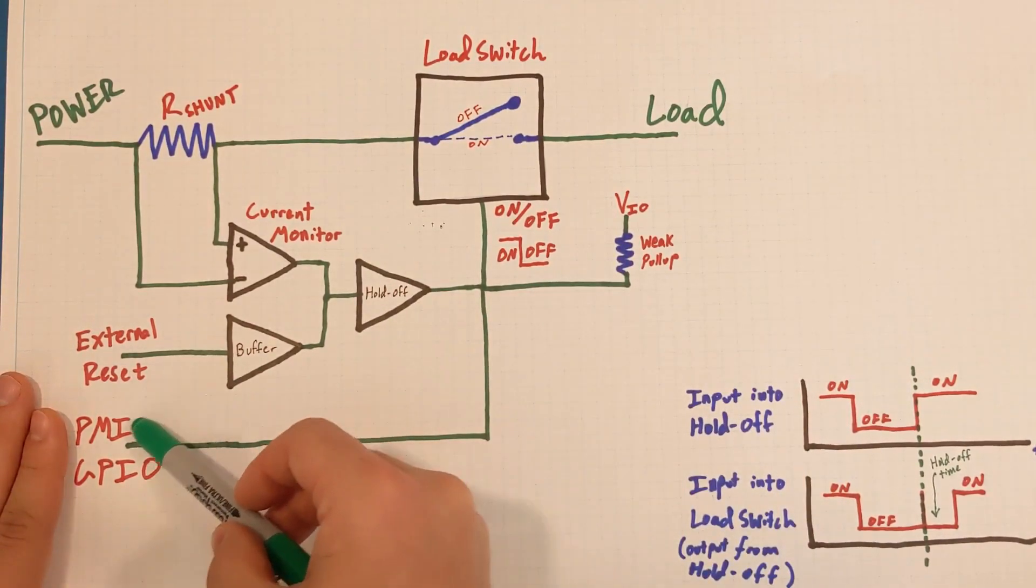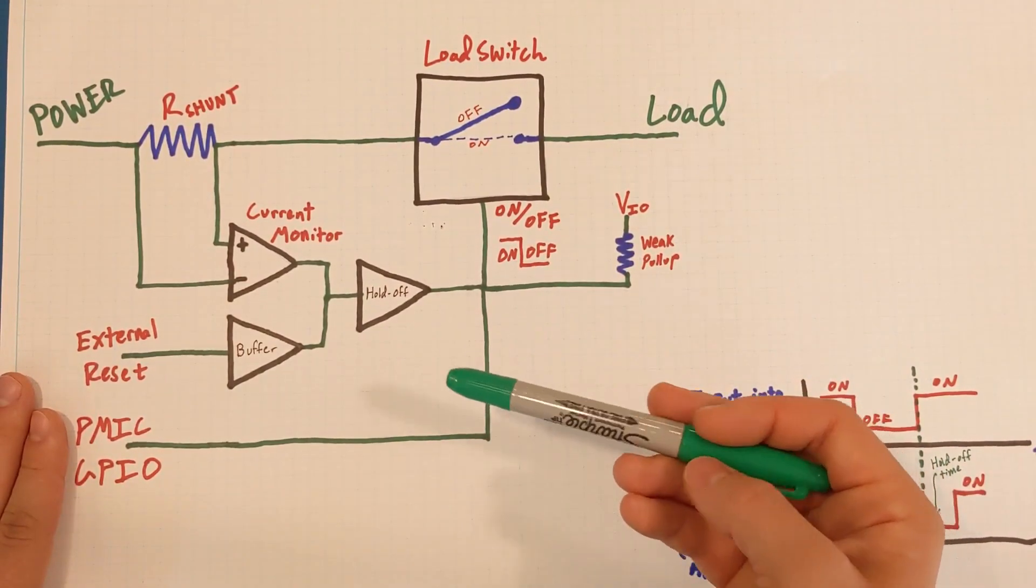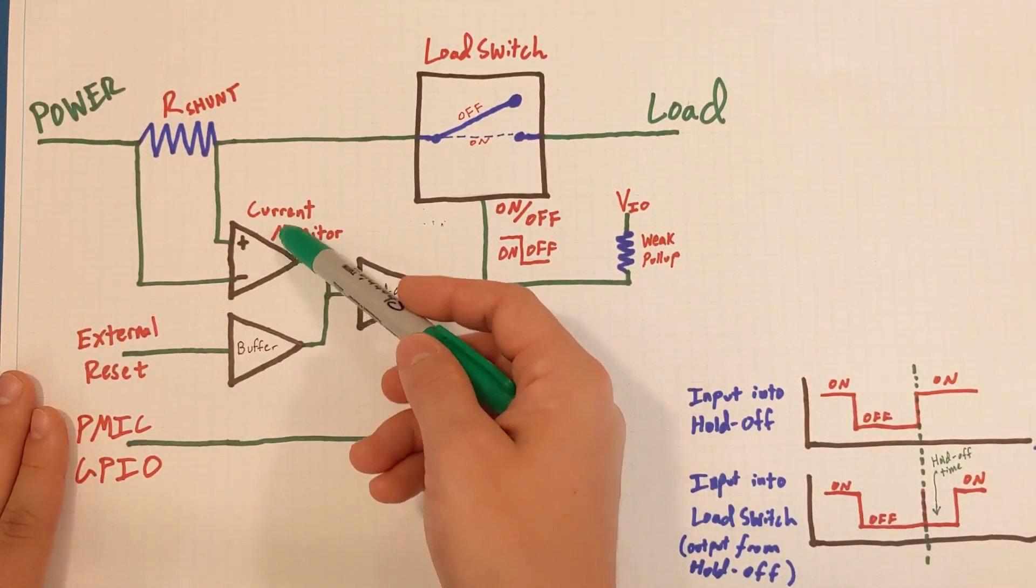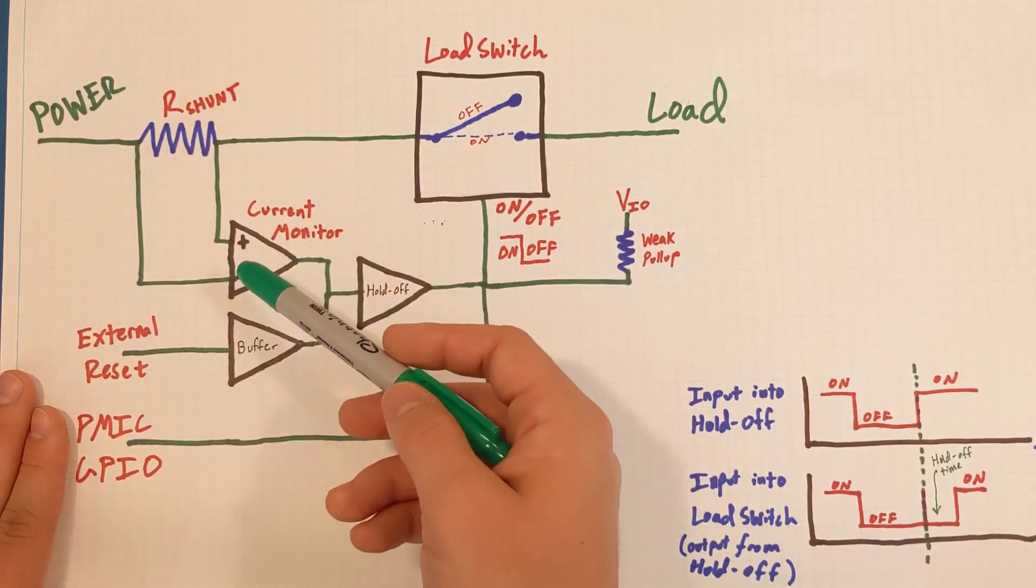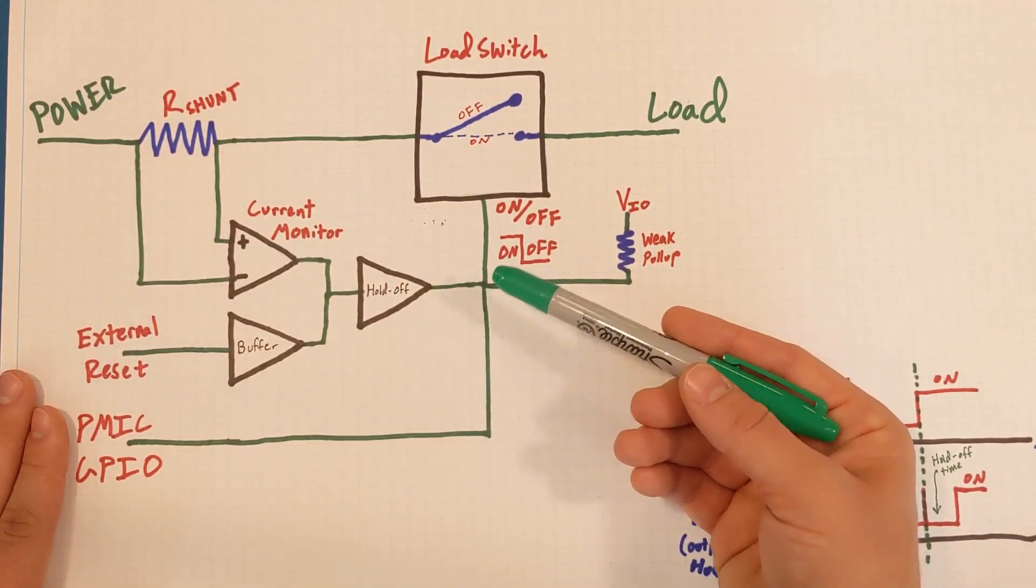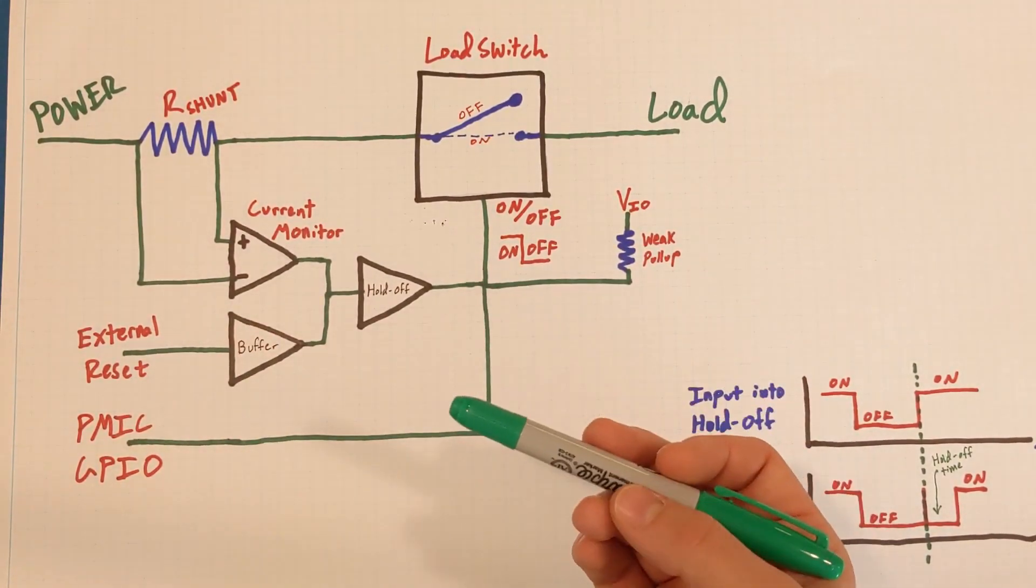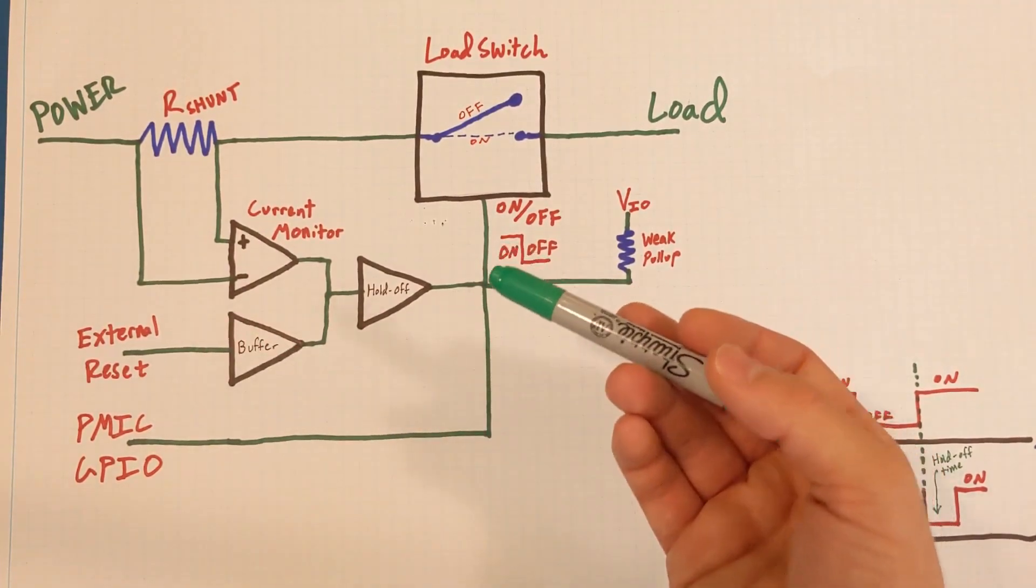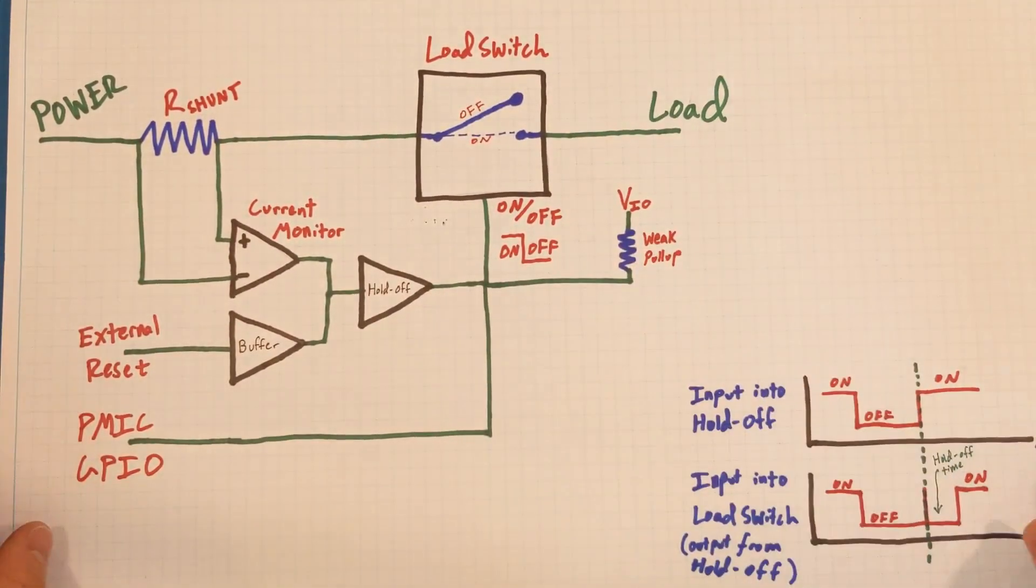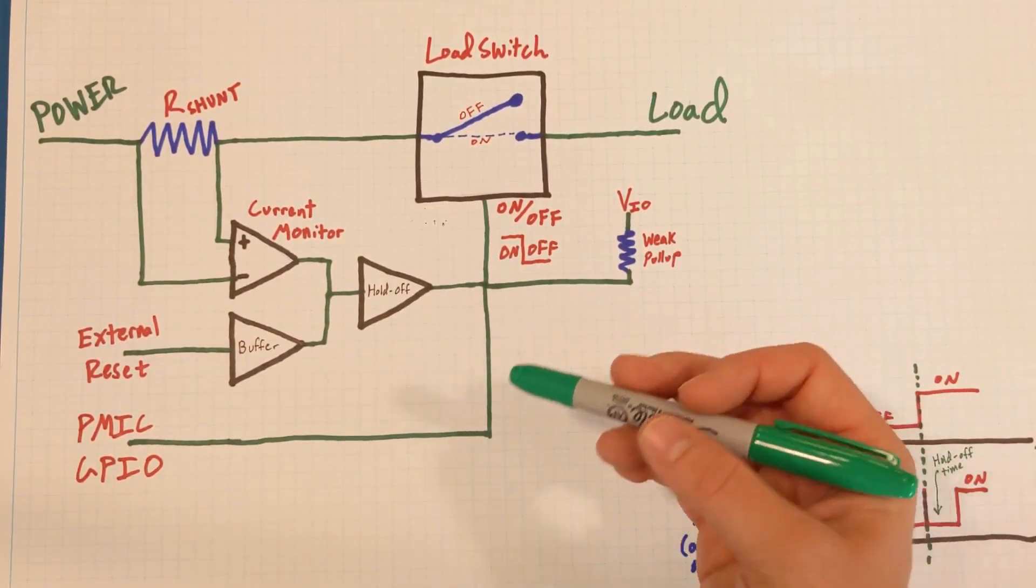So the power management IC can drive this signal low, which will turn off the load switch, and allows the power management IC individual control for all 16 of those voltage rails. In addition, I have a current monitor, which is connected to this shunt resistor, so it's measuring how much current is going into the load, and if it goes over a specified bound, it will trip and turn off the load switch. I also have an external reset signal, which accomplishes the same thing. If you trigger this, it will turn off the load switch. Both the current monitor and external reset go through a hold off circuit, which will just hold the load switch in the off position for a little while, giving everything time to reset, just as an extra safety precaution.